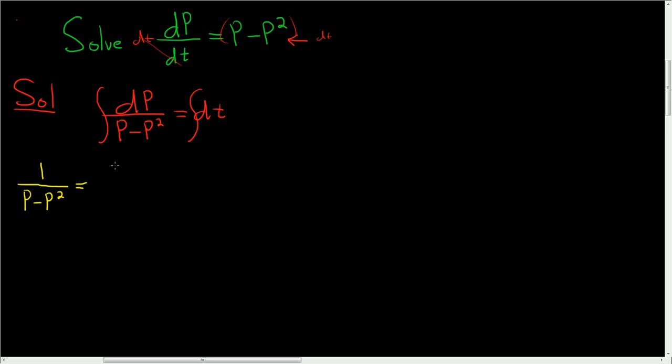This can be written as 1 over, well, if we factor out a p, we get p times 1 minus p. And there's a couple ways to actually rewrite this and break it up. The most common way is to use partial fractions, and you can do that either the long way or using the cover-up method. Another way of doing this is to be clever.